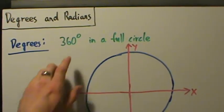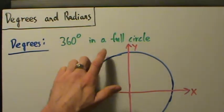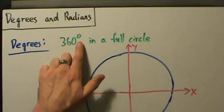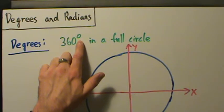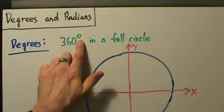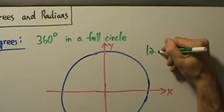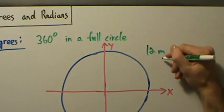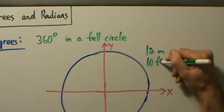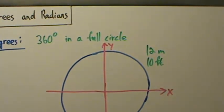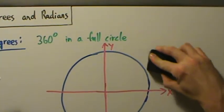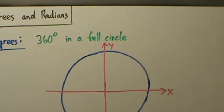There are 360 degrees in a full circle. This symbol here — a superscript circle — is not the letter O, not a zero. It's just a symbol that denotes degrees. So just like 12 meters uses 'm' for meters, or 10 feet uses 'ft' for feet, the superscript circle is the symbol for degrees.